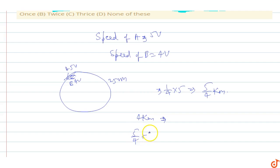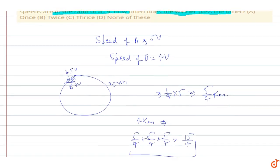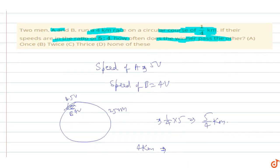5/4 plus 5/4 plus 5/4 is 15/4. So 3 times this, A will cross B 3 times in the 4 km race.